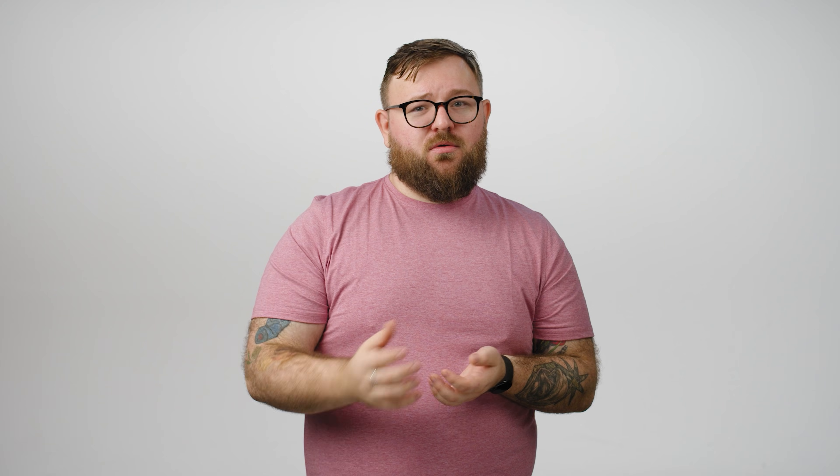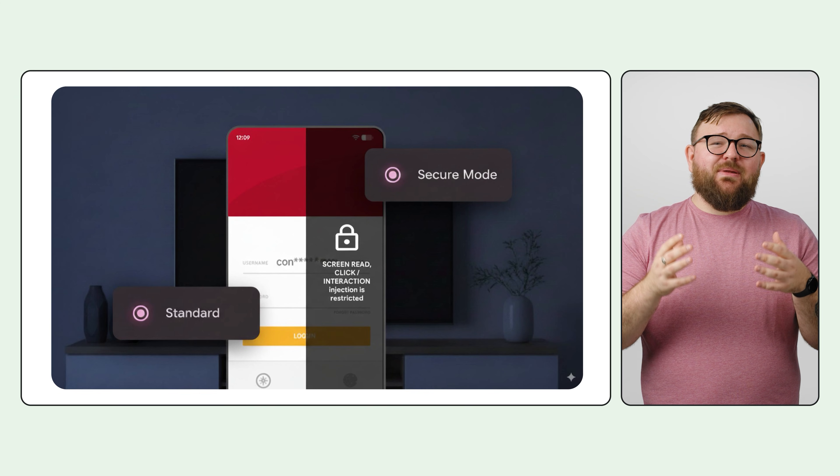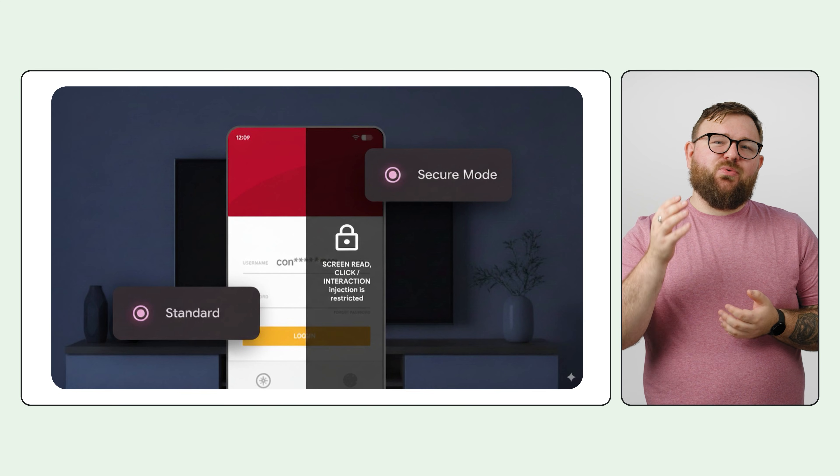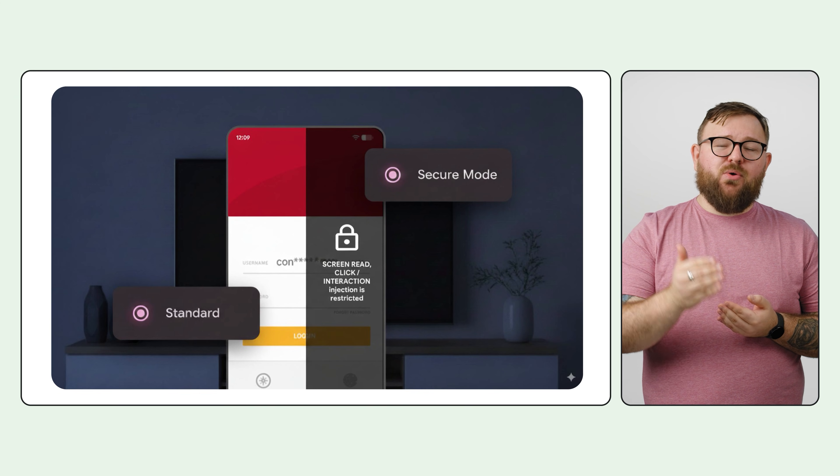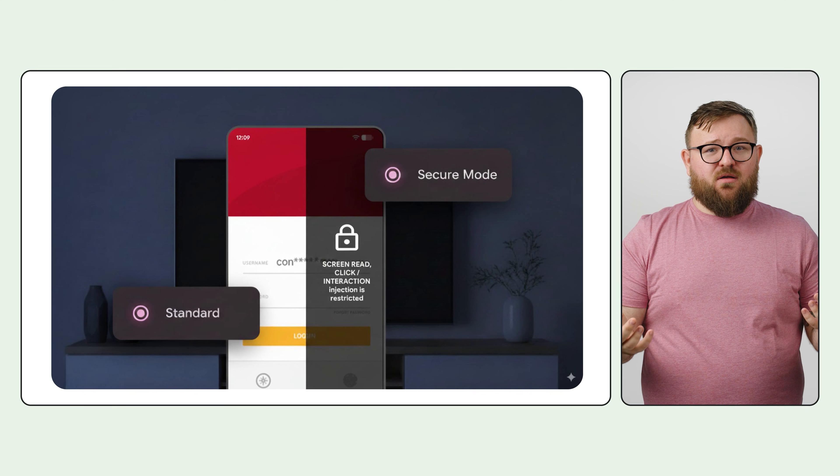Security is a foundational pillar of Android, and in Android 16 we introduced a feature to help address these threats without degrading accessibility functionality. Best of all, it's implemented using only a single new line of code. The Accessibility Data Sensitive flag allows you to explicitly mark a view or composable as containing sensitive data.